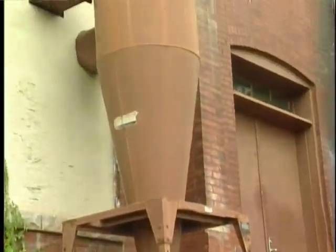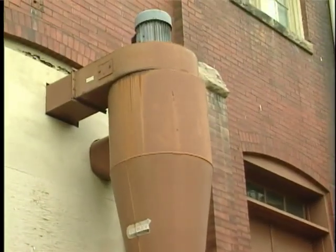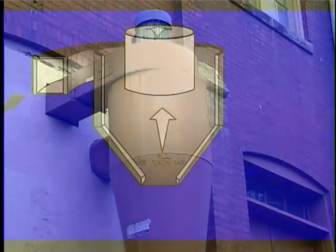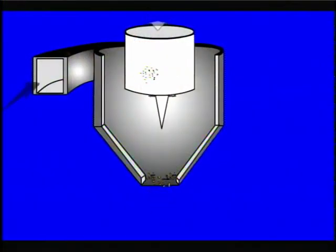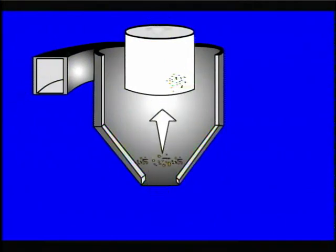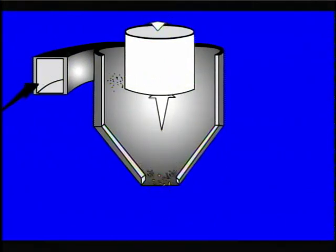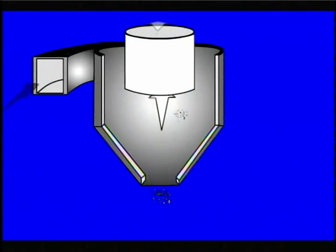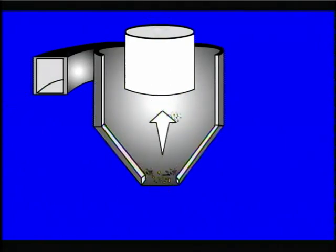The exit tube extends into the barrel section to a level below the tangential entry, in order to prevent direct discharge of the entering gases. Separation of the particles from the gas stream takes place during the outer rotation. Inertial forces imparted to the particles cause them to move to the wall of the cyclone. Since the gas stream velocity is very low near the wall, gravity causes the particles to move down the wall and out the bottom of the cone section.